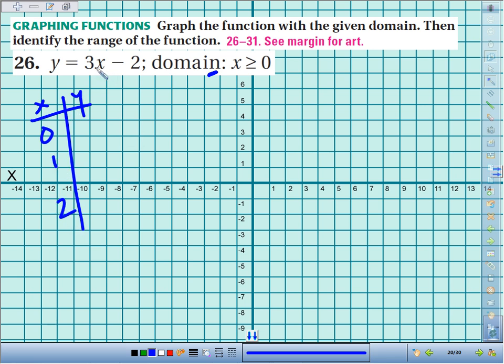If we plug those values in for x, 3 times 0, that's 0, minus 2 gives me a y value of negative 2. Let's try 1. 3 times 1 is 3, minus 2 gives you 1. And if we plug in 2, 3 times 2 is 6, 6 minus 2 is 4.